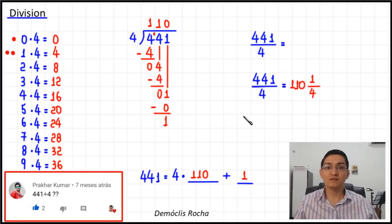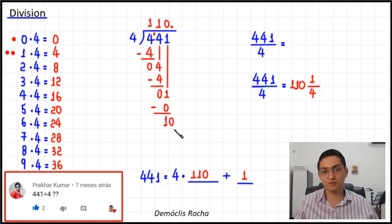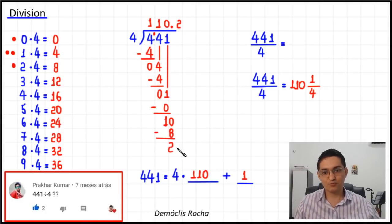But what if you want to continue the division? You could put the decimal point here. Since there are no digits to bring down, you bring down a zero, and now you have 10. You ask: how many times does four go into 10 without going over? Three times four is 12, which is too much, so the number is 2. I write 2 here, two times four equals eight — I write it here, and then I subtract. Ten minus eight equals two.